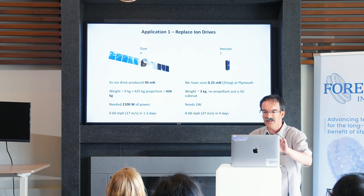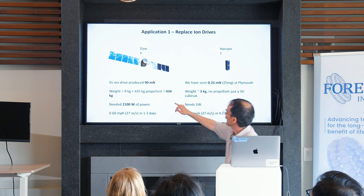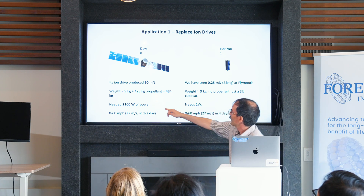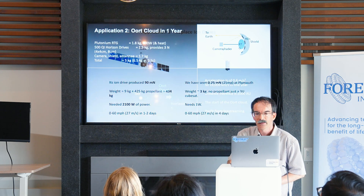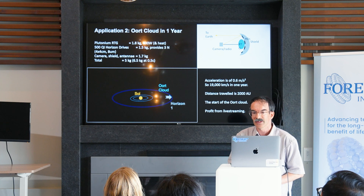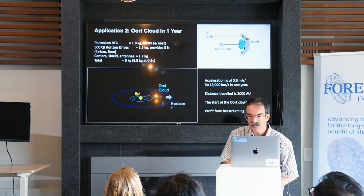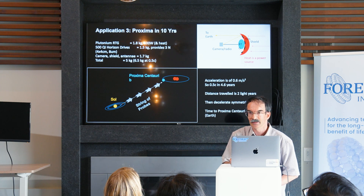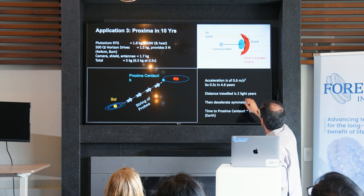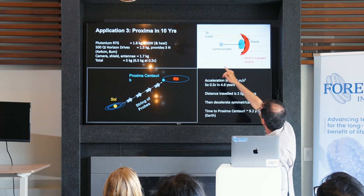Application one: replace ion drives. We can do a much better job than normal ion drives. They usually need to carry propellant, which makes them very heavy and power-hungry. With capacitors, we can do it with much less weight and power. This would make possible a trip to the Oort cloud within a year. With a spacecraft using an RTG, a trip to Proxima Centauri in about 10 to 15 years — a spacecraft with lots of horizon drivers powered by an RTG, with a camera and radio relaying back to Earth through a string of probes.